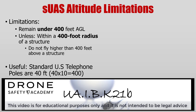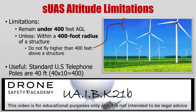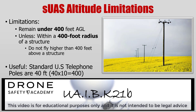Let's dive into SUAS altitude limitations. As the remote pilot in command, you need to remain under 400 feet AGL. There is one exception though — that's when you're within a 400 foot radius of a structure. You can fly up to the top of the structure, but no more than 400 feet above the structure. Here's a helpful tip: a standard US telephone pole is 40 feet, so times that by 10. That should give you an idea. Hopefully you don't have to rely on a tip like that, and just rely on your SUAS system to give you the altitude of the unmanned aircraft.